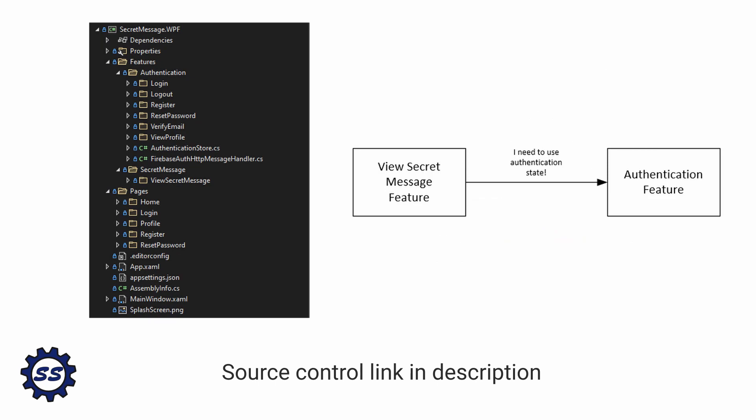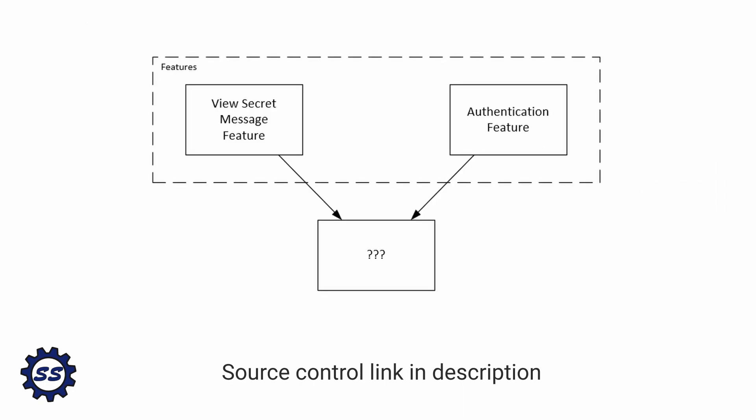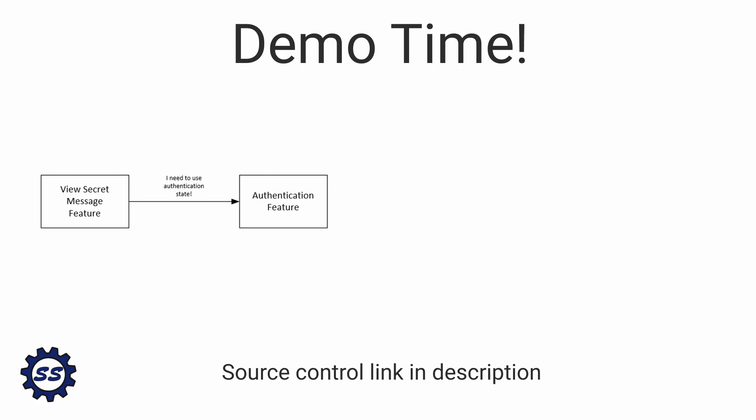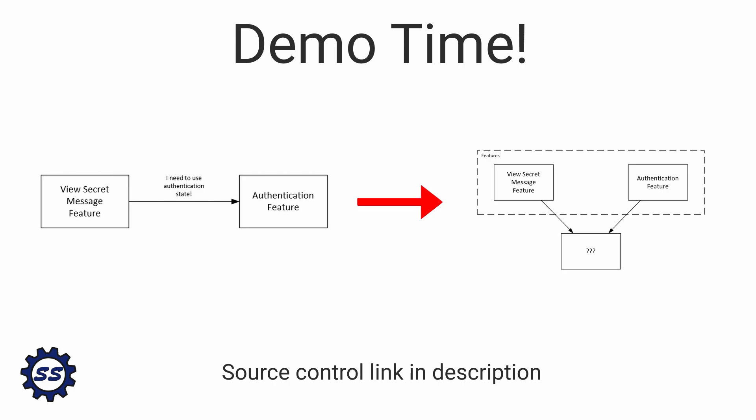However, what if multiple features need to share similar objects or application state? In that case, it wouldn't really make sense to extract a pages layer above our features layer. Instead, we'd need a layer underneath of our features layer that would contain those shared objects and state. So this time we're going to introduce a feature-to-feature dependency that depends on application state, and then introduce a layer underneath our features layer that multiple features can depend on to share that state.